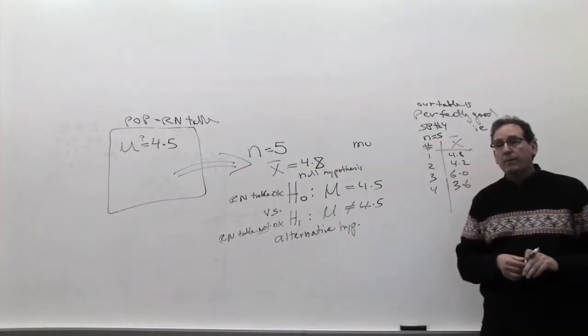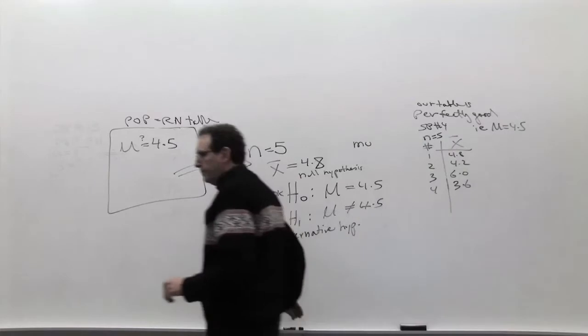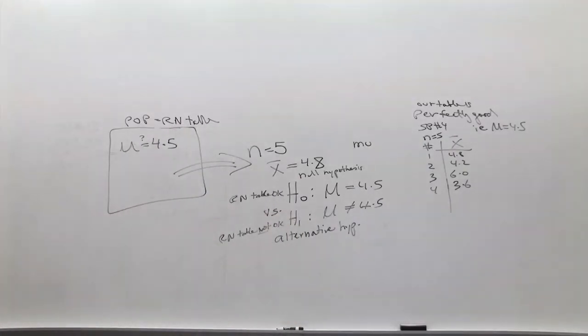A student asks: But how about if you get just one 4.8 and all the other ones are like 9? You still need that confidence interval, don't you? First of all, bringing up confidence interval is not incorrect. In fact, chapter 8 and chapter 9 are flip sides of each other, so you can go from one to the other. Let's try to ignore confidence intervals right now.